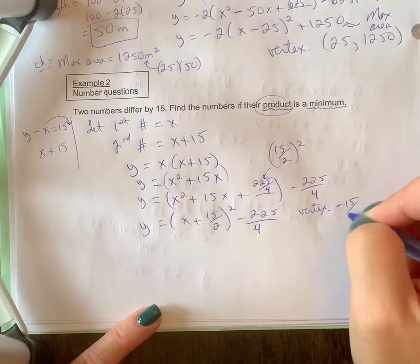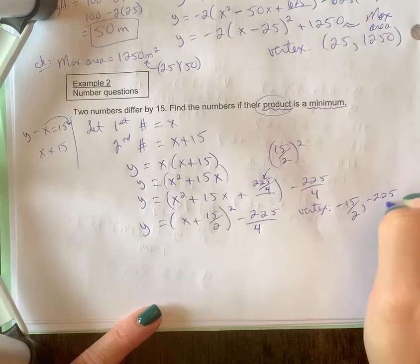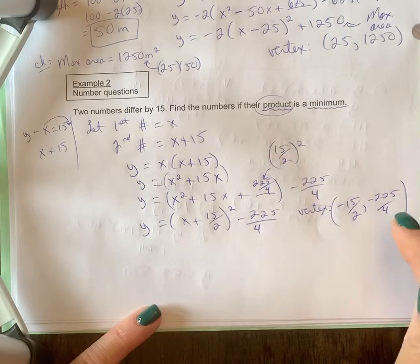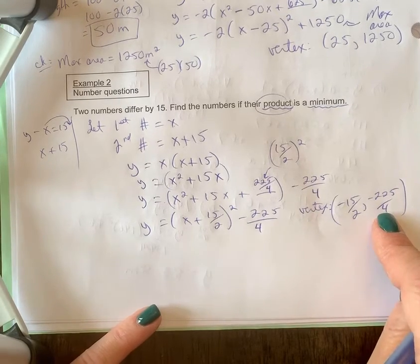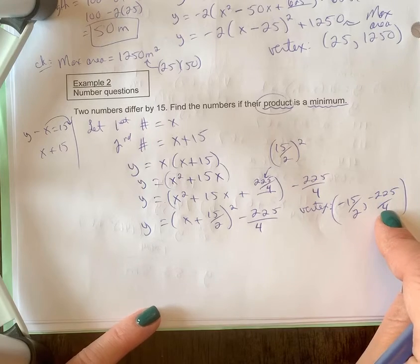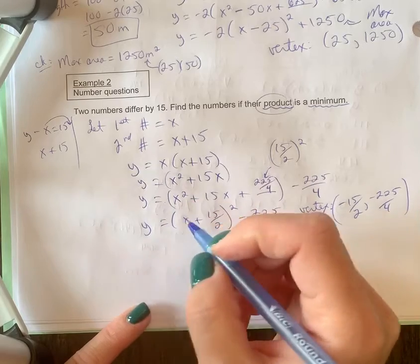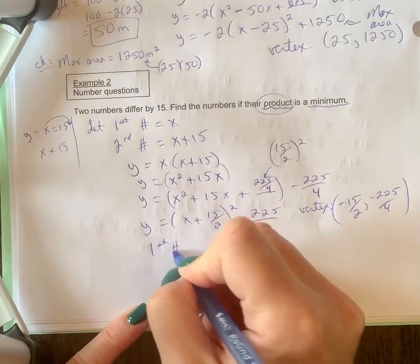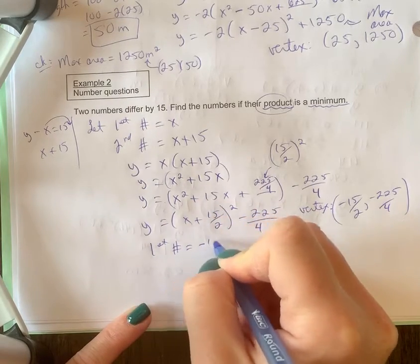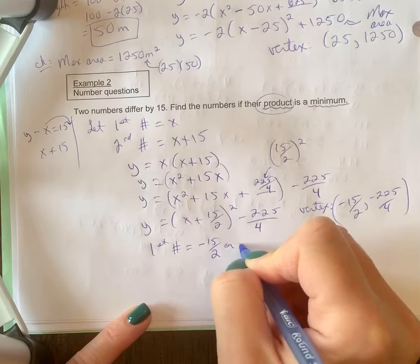My vertex is negative 15 over 2 and negative 225 over 4. This would be the minimum product. What are my numbers? Well, the first number is represented by x, meaning the x value of the vertex, so the first number is equal to negative 15 over 2 or negative 7 and a half.